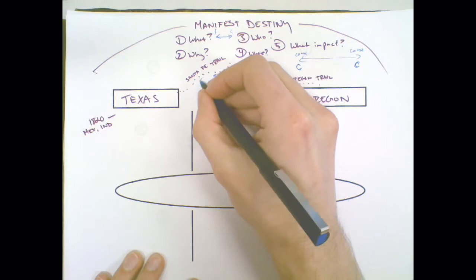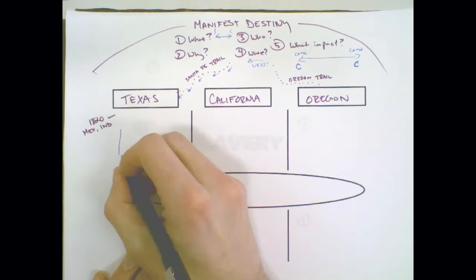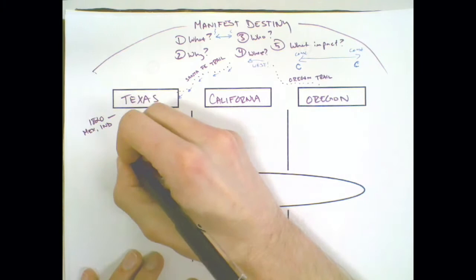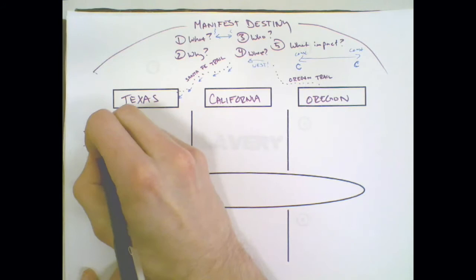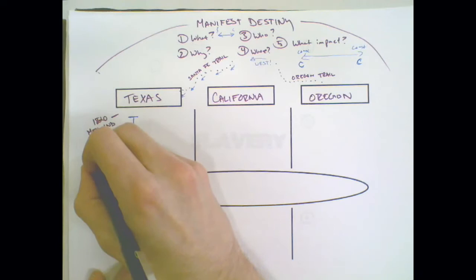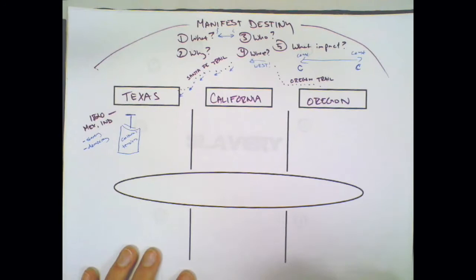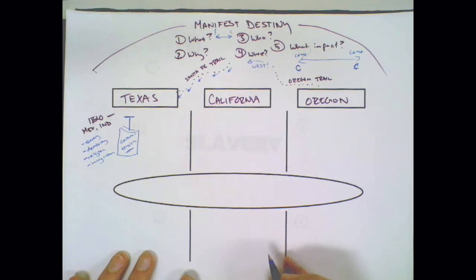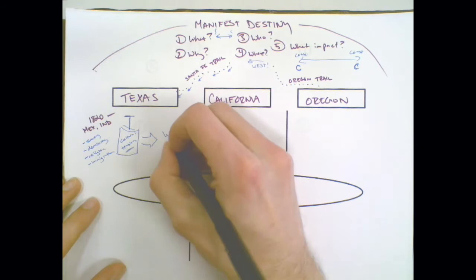In 1820, Mexico is independent. When Mexico becomes independent, they allow American settlers to come in on the Santa Fe Trail. These American settlers bring with them certain ideas, and these ideas cause a lot of tensions. These tensions are all about culture: things like slavery, because America allowed it, Mexico did not; things like democracy; things like religion; things like immigration.